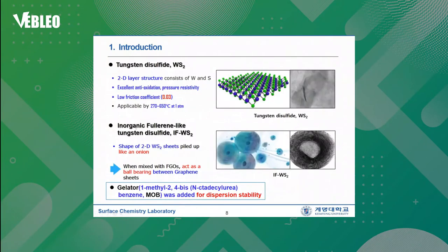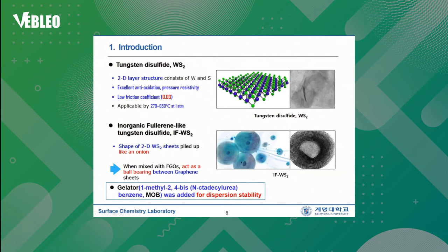This figure shows the structure of tungsten disulfide (WS2) and inorganic fullerene-like tungsten disulfide (IFWS2). Tungsten disulfide has a two-dimensional layer structure consisting of tungsten and sulfur. This material shows excellent anti-oxidation, pressure resistivity, and a low friction coefficient of 0.03. It is applicable up to 650 degrees at atmospheric pressure. IFWS2 has a shape of 2D WS2 sheets piled up like an onion. When mixed with functionalized graphene oxide, it acts as a ball bearing between graphene sheets. A gelator, MOB, was also added for dispersion stability.